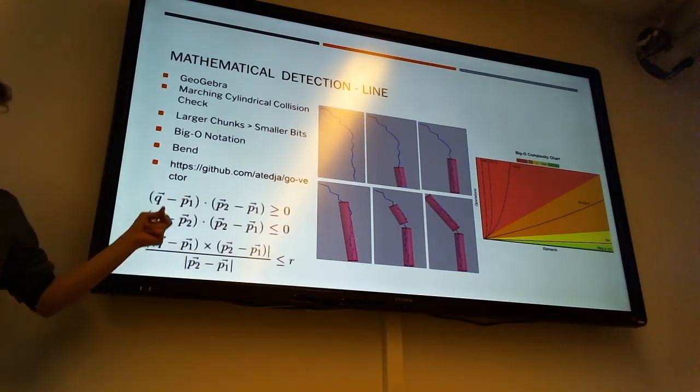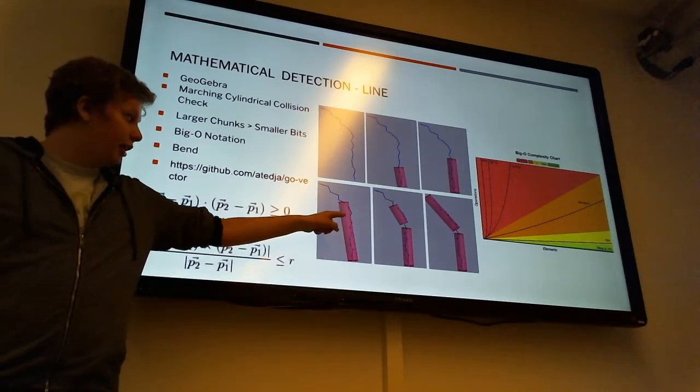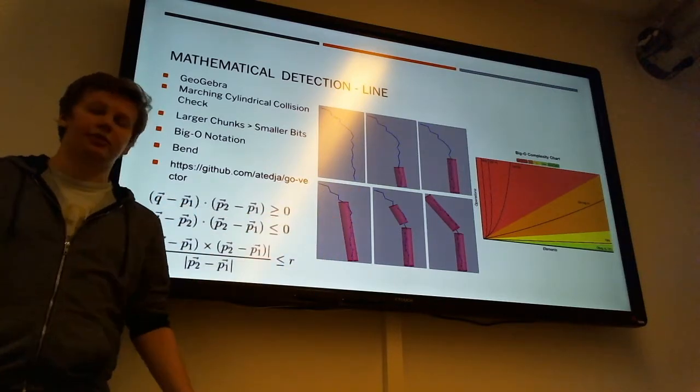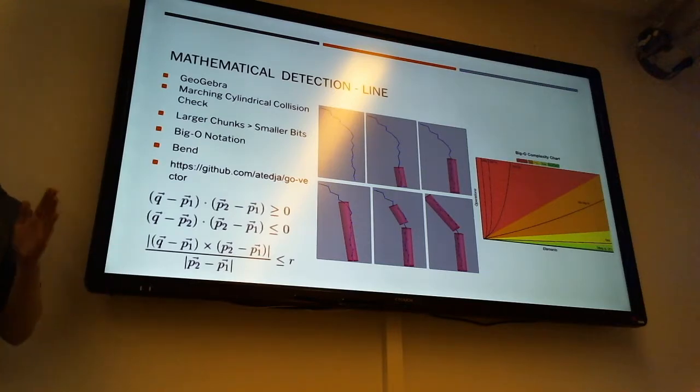And it'll keep moving up until it finds a discrepancy, like you can see right there. That point is not within the cylinder. And of course, that can be controlled with the radius of the cylinder, which is essentially a variable for how straight the actual flight path is.